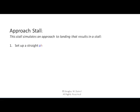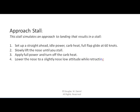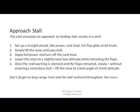An approach stall simulates an approach and landing that results in a stall. Set up a straight-ahead, idle power, carb heat on, full flap glide at 60 knots in a 152 — probably 65 in a 172. Slowly lift the nose until you stall. Apply full power and turn off the carb heat. Lower the nose to a slightly nose-low attitude while retracting the flaps. When applying full power and turning off the carb heat, push forward on the right rudder pedal because P-factor is going to increase dramatically. Once the stall warning is silenced and flaps retracted without entering a secondary stall, lift the nose to a best angle of climb attitude. Keep the wings level and the ball centered throughout — this is incredibly important.